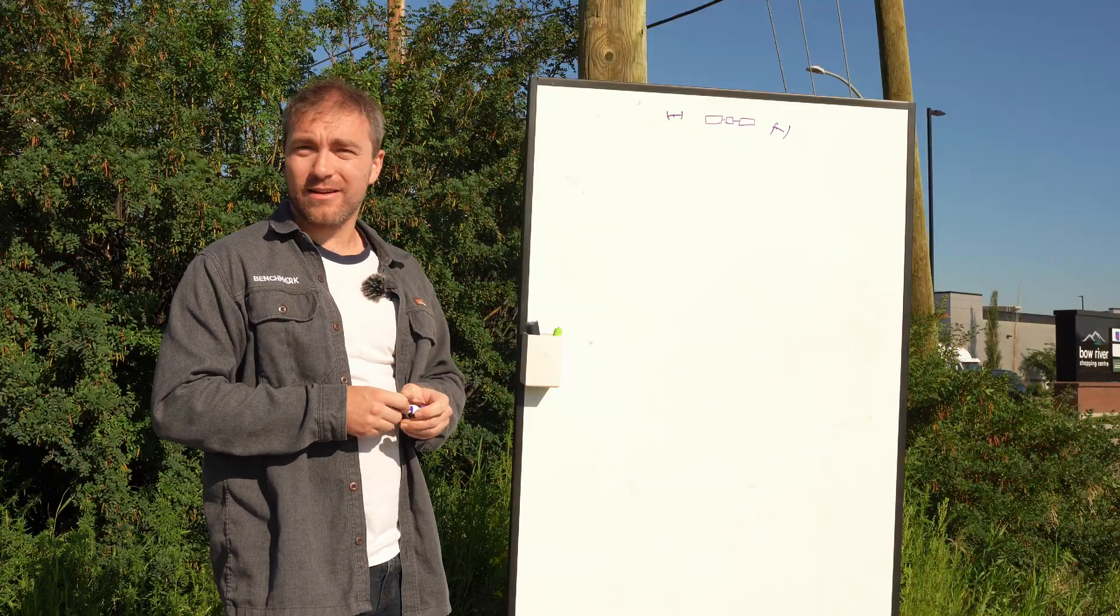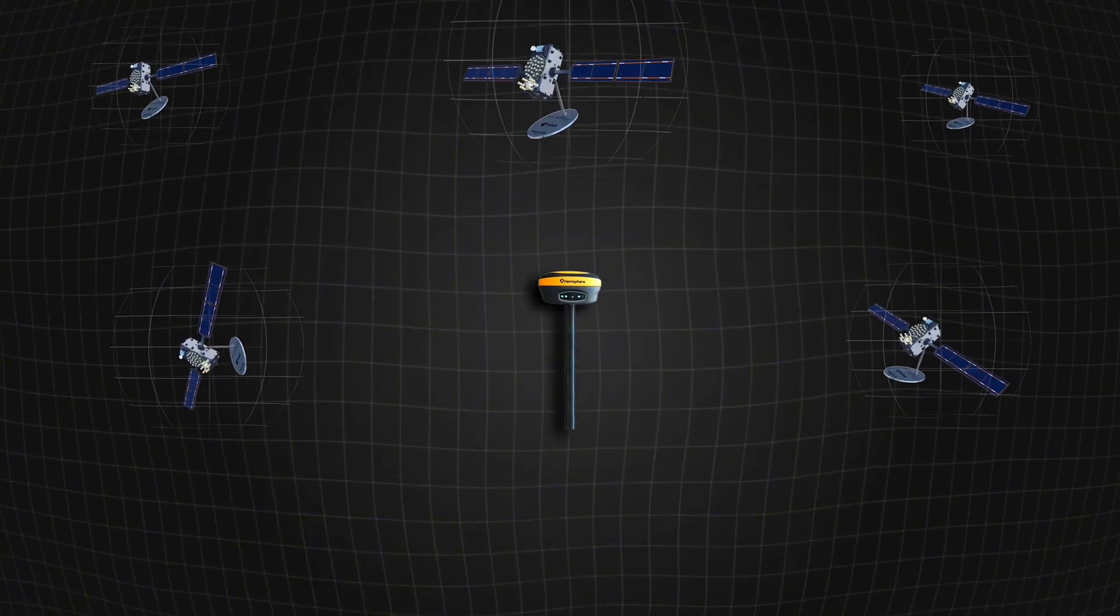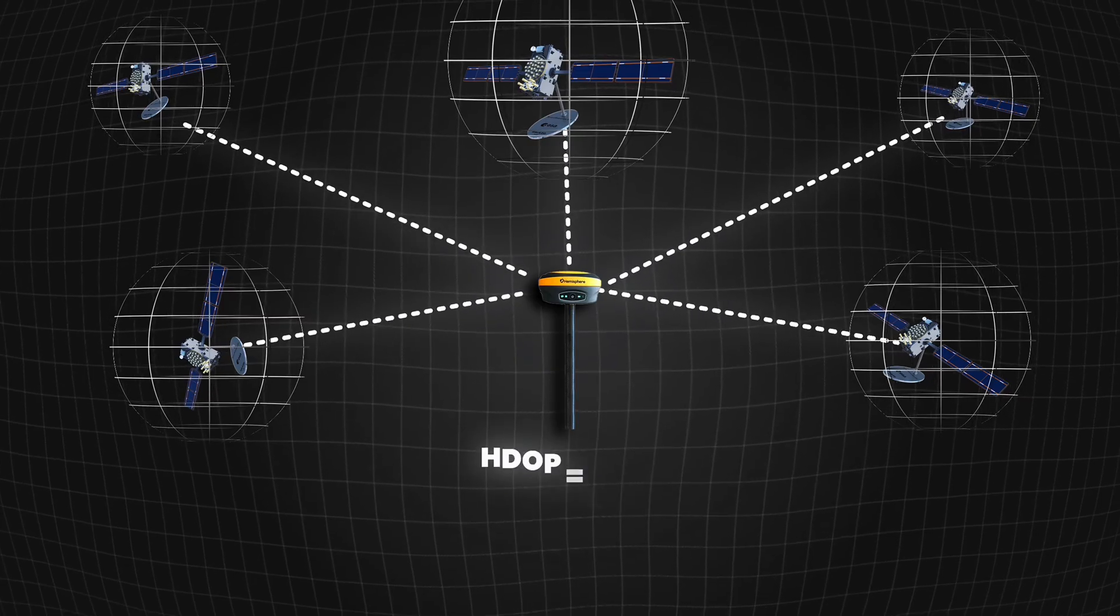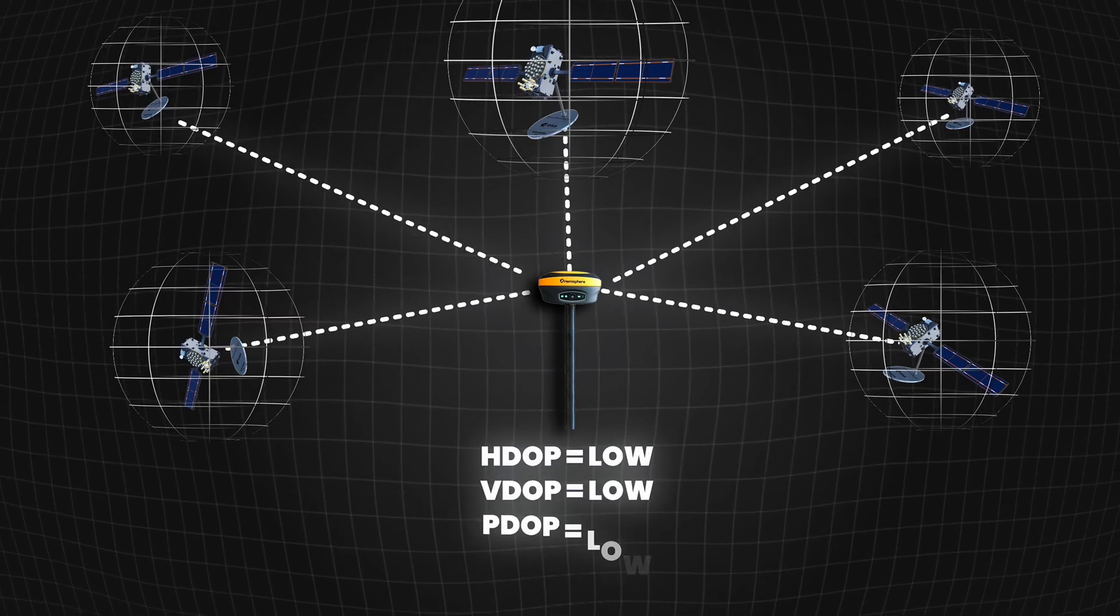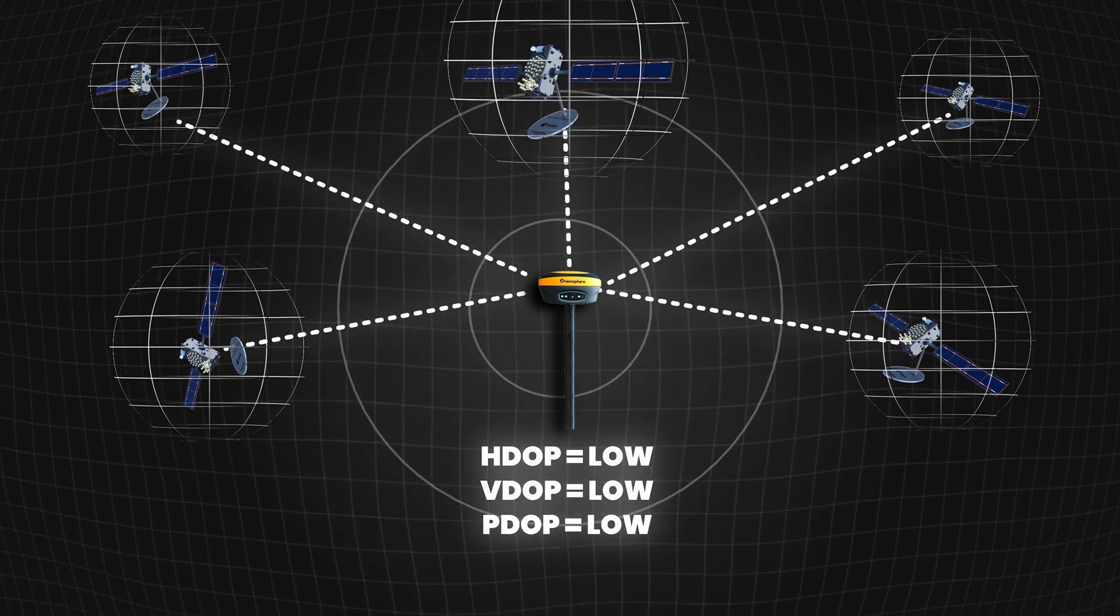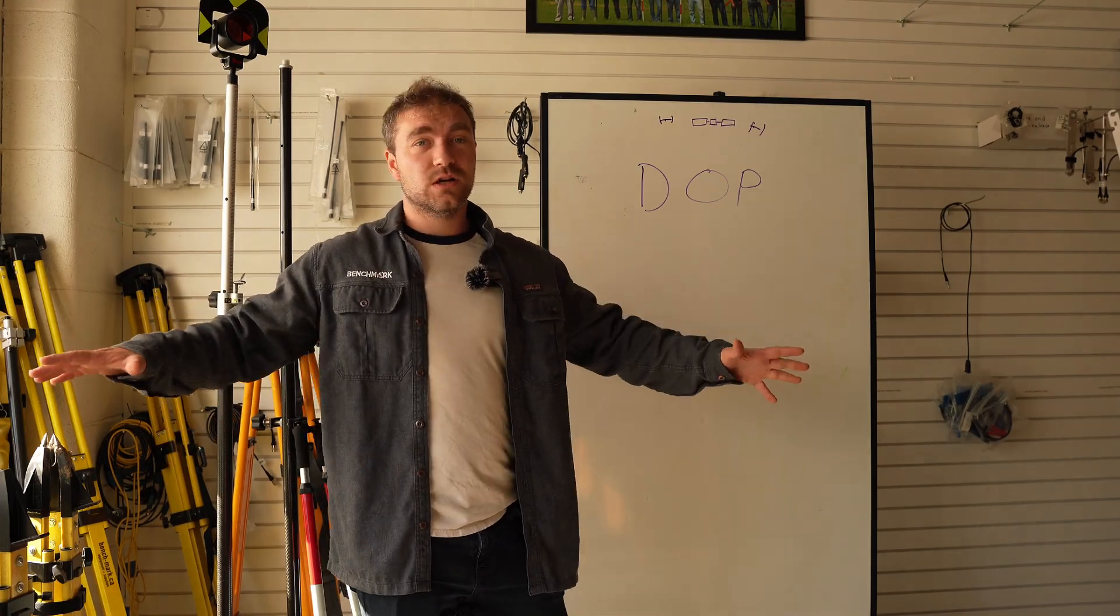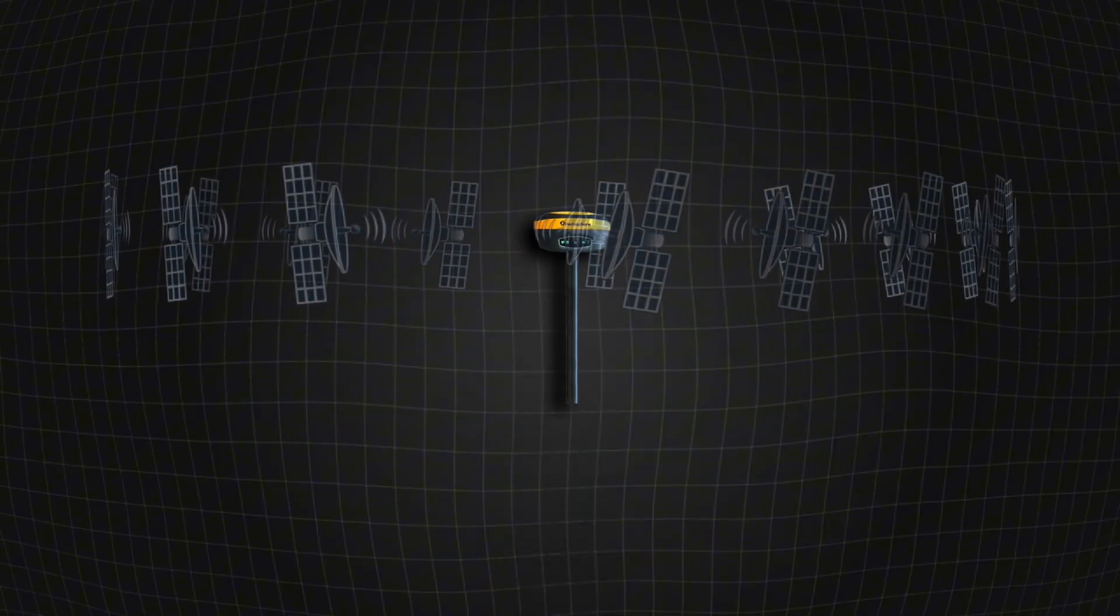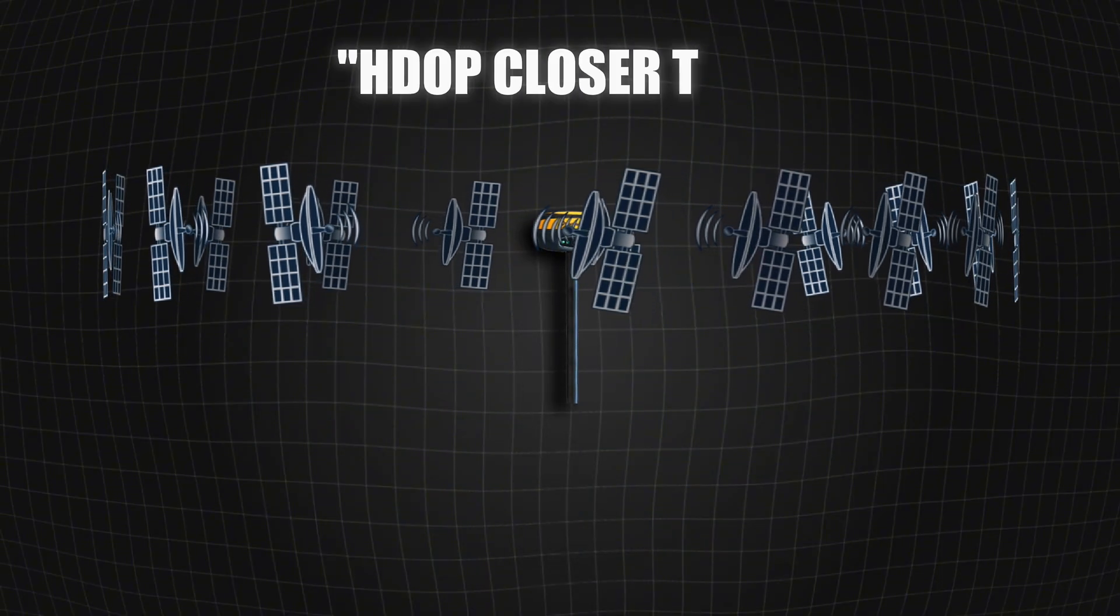So just a few examples because I like making our graphics guy do a bunch of work. To start off, you're in a field. You got satellites everywhere. You got satellites above you. You got satellites beside you. You should see a very low H-DOP, a very low V-DOP, and therefore a very low P-DOP, because you have satellites all over the place. So you have a very strong geometry in every direction. To have a really good H-DOP, to have a horizontally very strong satellite geometry, you want satellites all the way around you, all the way in this horizontal plane. That's how you get an H-DOP closer to one.